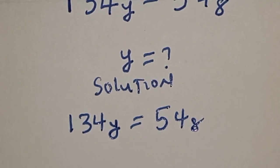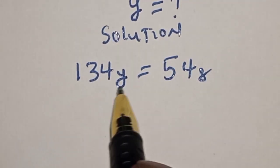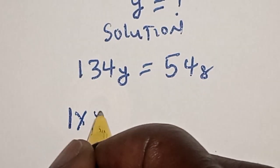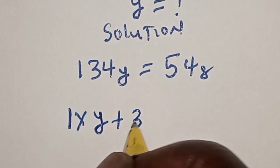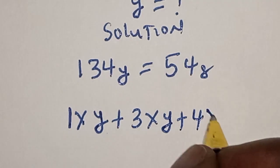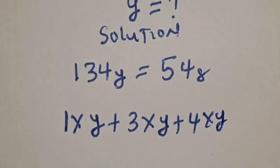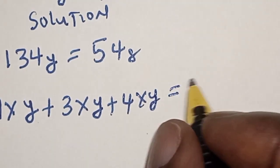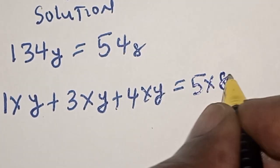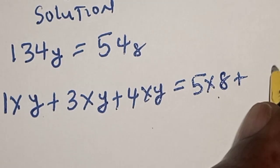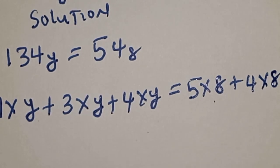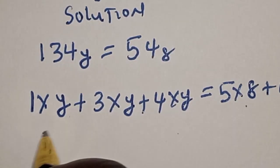What we need to do first is to convert this equation to base 10. That is, 1 multiplied by y plus 3 multiplied by y plus 4 multiplied by y is equal to — on the right-hand side — 5 multiplied by base 8 plus 4 multiplied by 8.